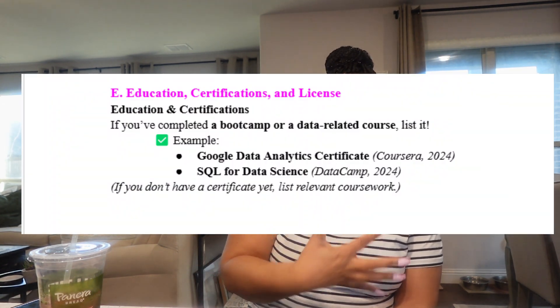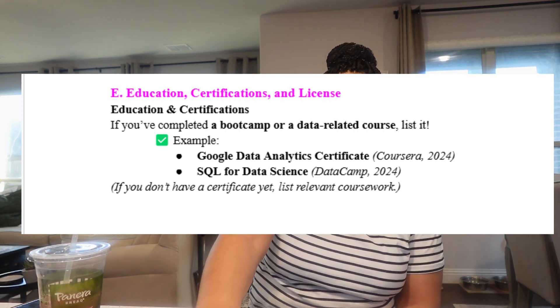The last section is education, certifications, and licenses. If you have any type of licenses, certifications, or education, add it there. You can list a Google Data Analytics certification, SQL for Data Science, or a boot camp with the name of the school. However, if you just recently graduated, do not put the graduation year — for example, do not put January 2025. You can put the boot camp name and what you studied, but please do not include the year you graduated.